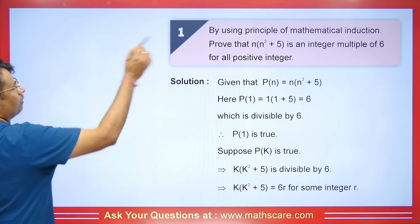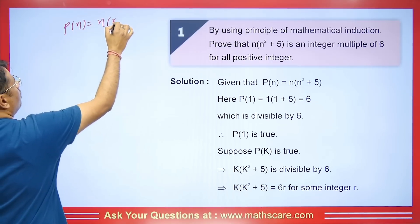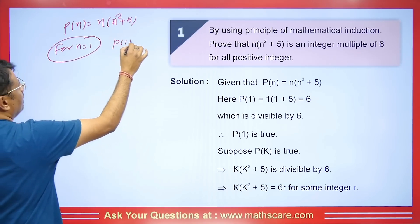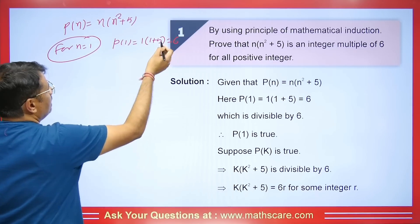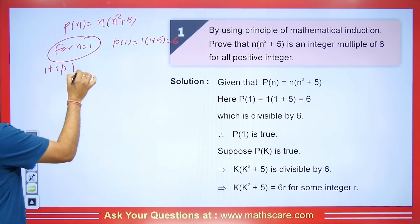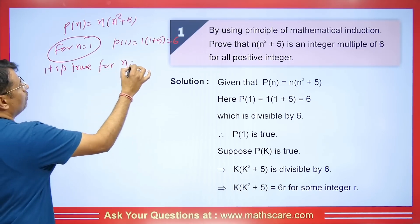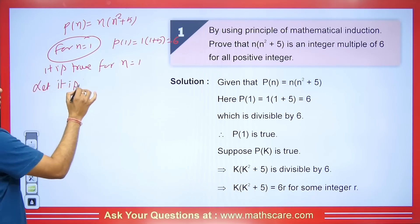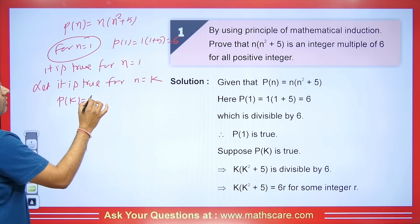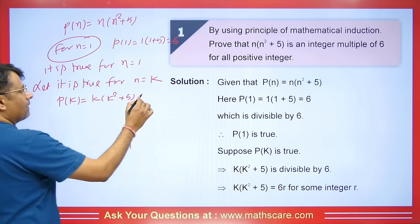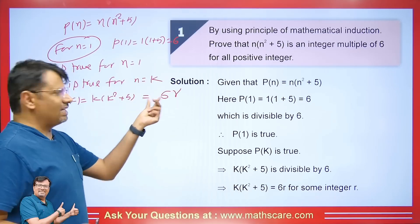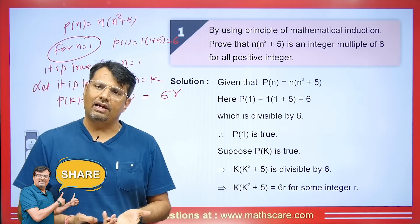Let us consider this as P(n). P(n) = n(n²+5). First, for n=1: P(1) = 1×(1+5) = 6, and we know 6 is a multiple of 6, meaning it is divisible by 6. So it is true for n=1. Now let it be true for n=k, meaning k(k²+5) is a multiple of 6. Let us assume its value is 6r — only then will it be divisible by 6.